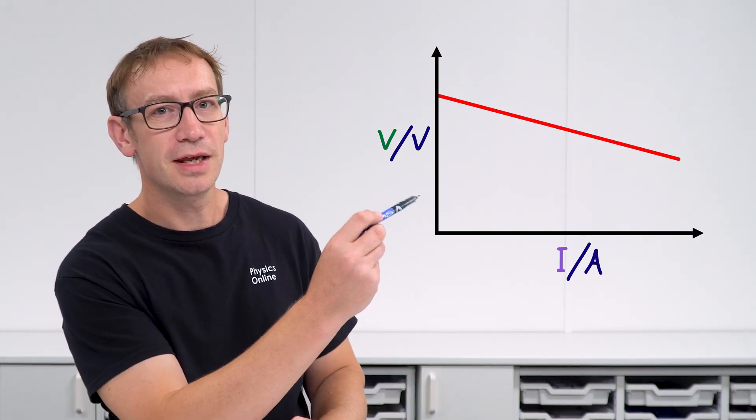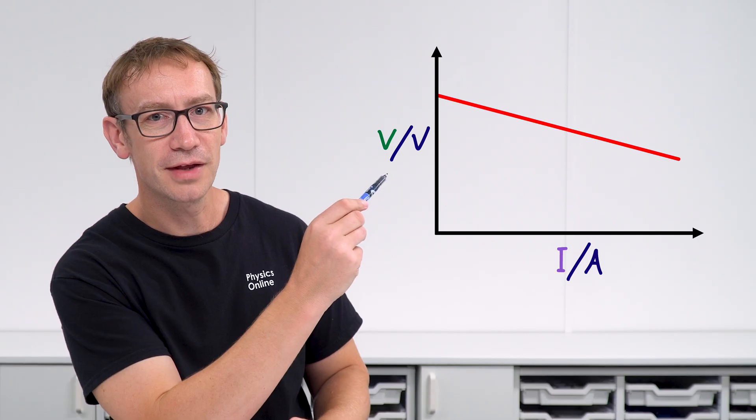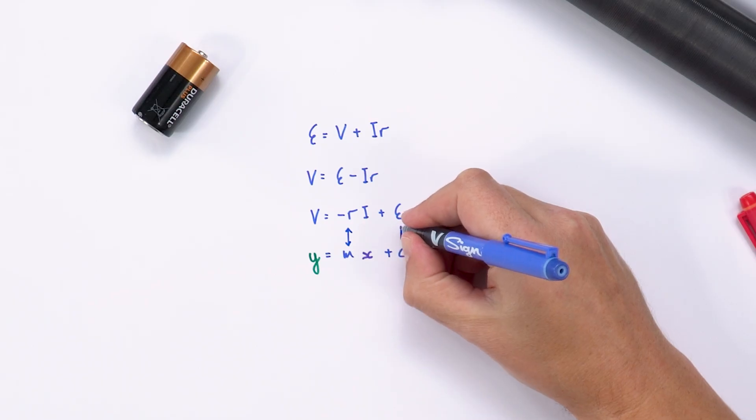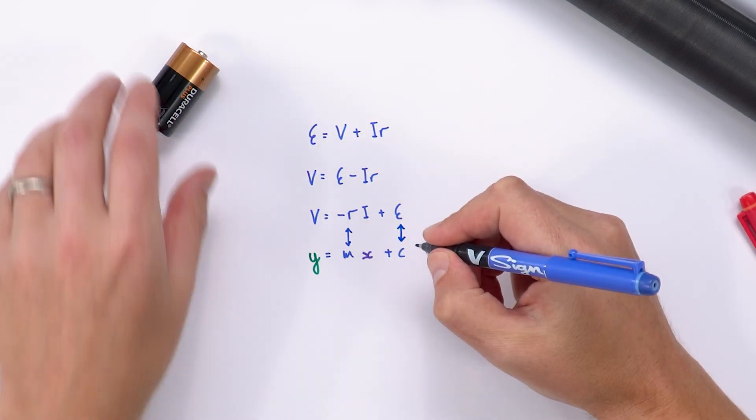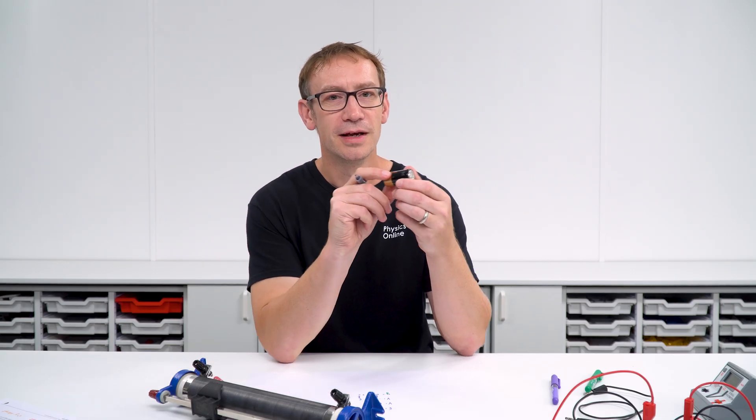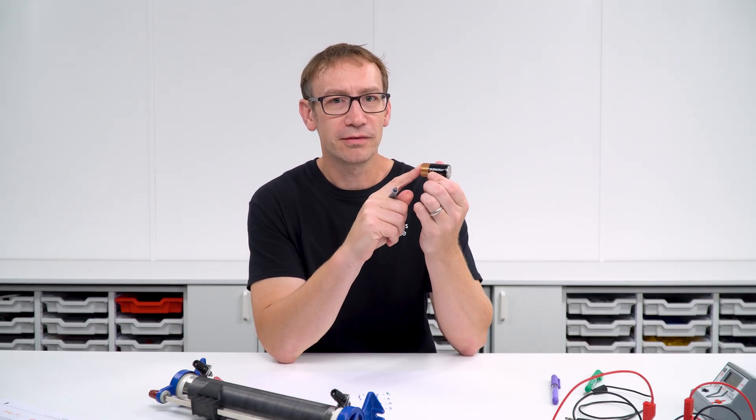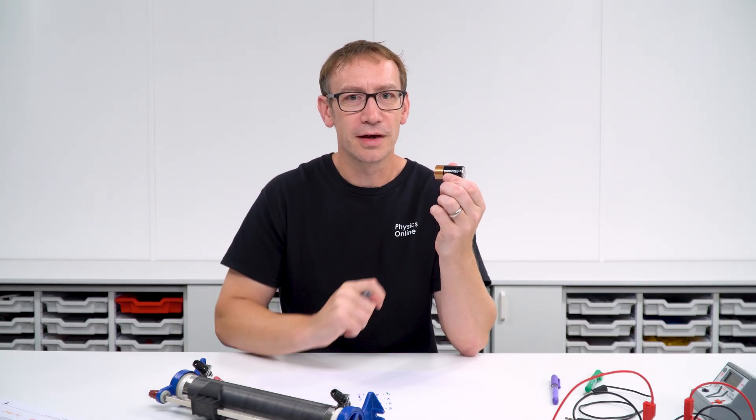And of course you can take the line back up to the intercept, and therefore if you read that off, that should be the value for the EMF of that cell. That's effectively the voltage of this when there's no current flowing in that circuit.